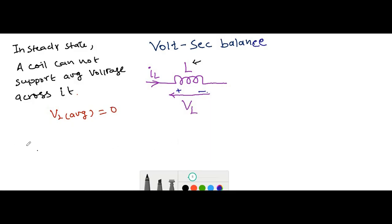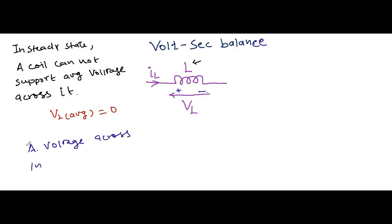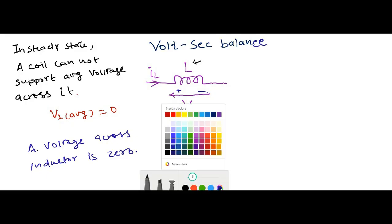In the steady-state condition, the average voltage across the inductor is zero. That is what the volt-second balance says.